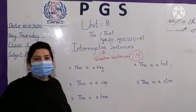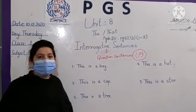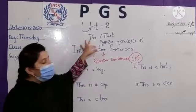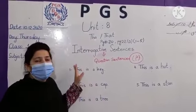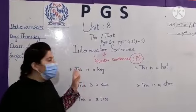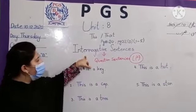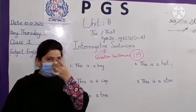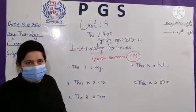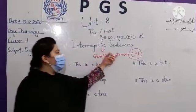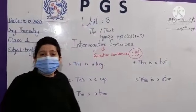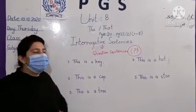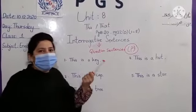How are you all? I hope you are doing good. Today we are going to do unit number eight. As before we have done affirmative and negative sentences, today we are doing the third part: interrogative sentences. Interrogative means question sentences. In Urdu we call it question sentences.